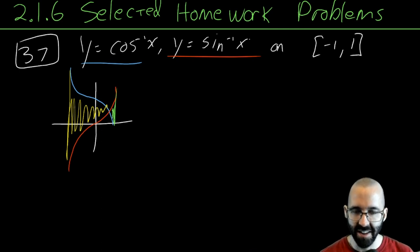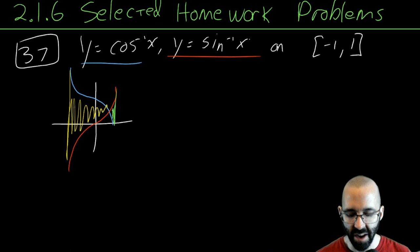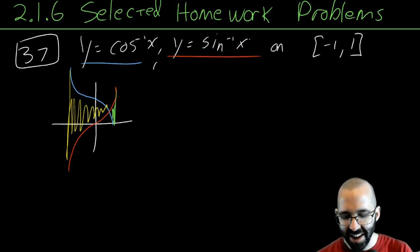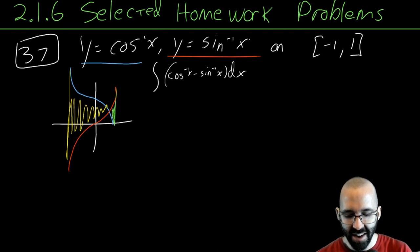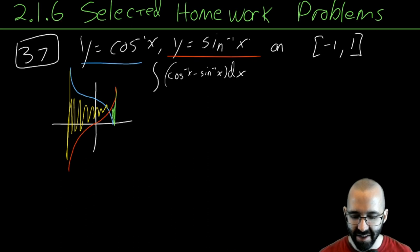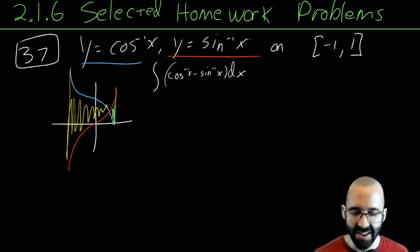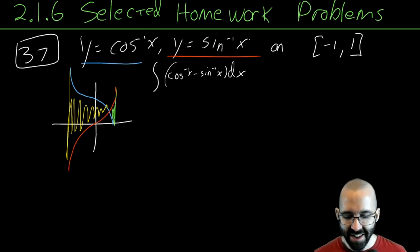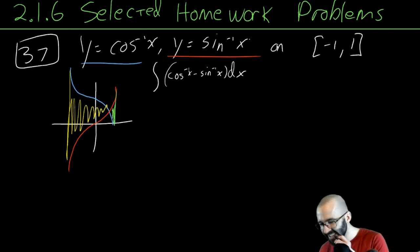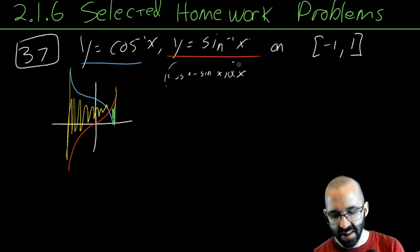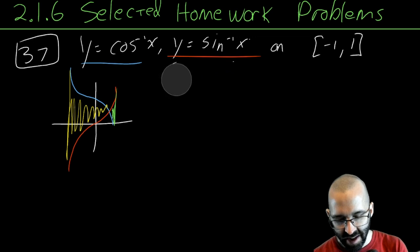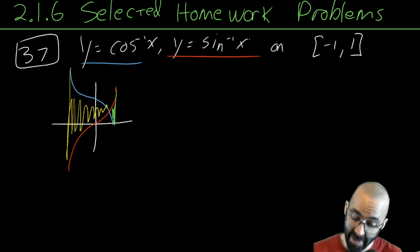Setting things up in terms of x is easier — blue minus red, then red minus blue for the other region — but the problem is when you integrate the inverse cosine of x minus inverse sine of x, there's no formula for that antiderivative, at least not one we currently have. So integrating with respect to x is no good here.